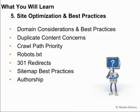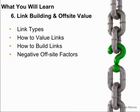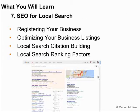We'll also consider the topic of authorship and how it may be impacting Google search results and link building — the types of links we want to get and the value of those links. We'll look at tactical examples of how to build links, as well as factors that may negatively impact your website's search rankings. For local businesses, we'll look at how to register your business, optimize those listings, build citations in local directories, and examine 20 local search ranking factors and how each one affects your position in the search results.